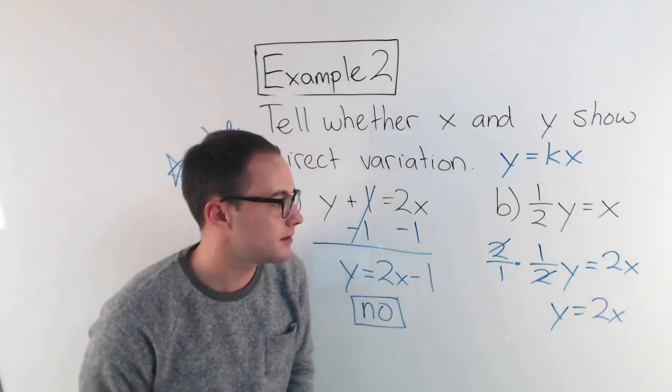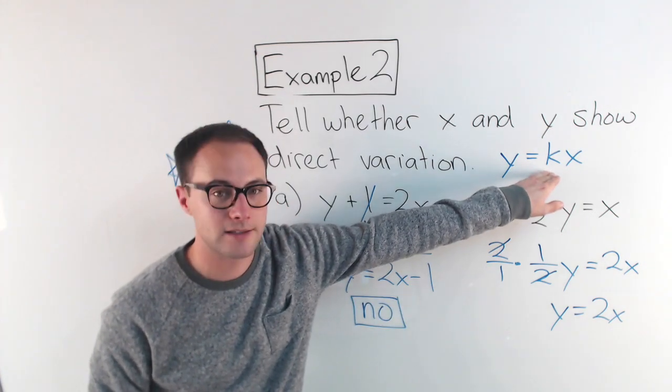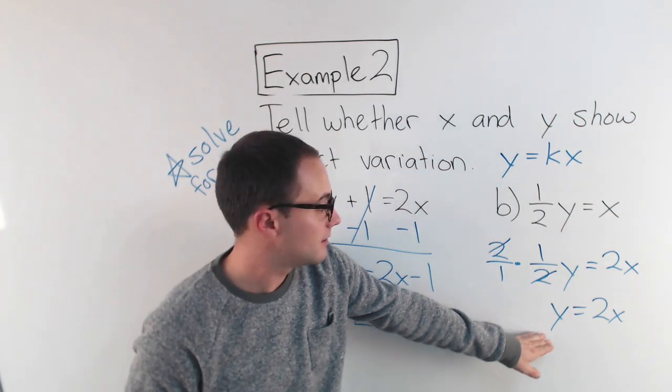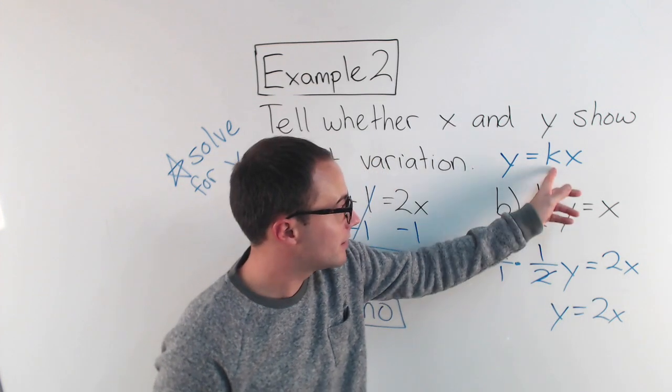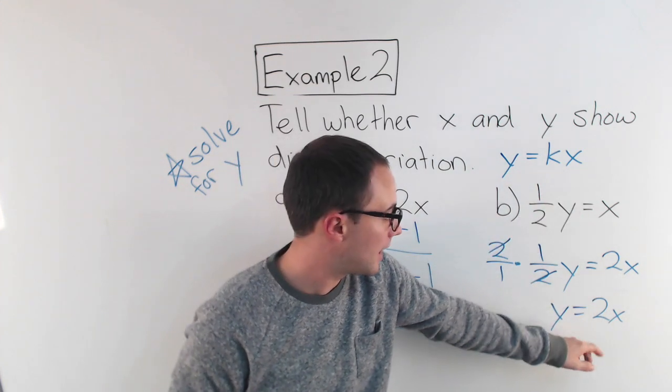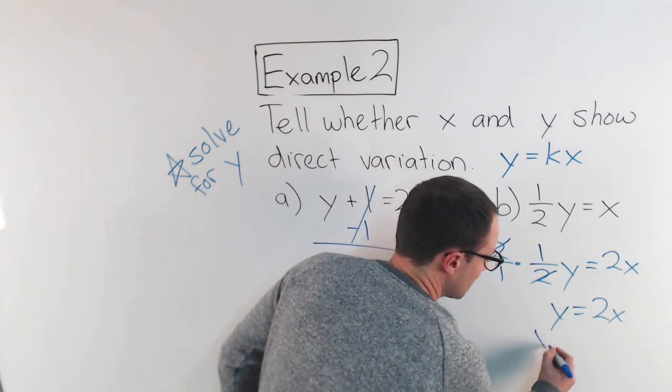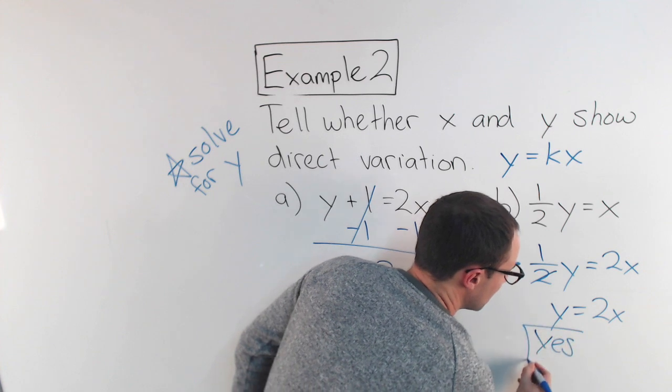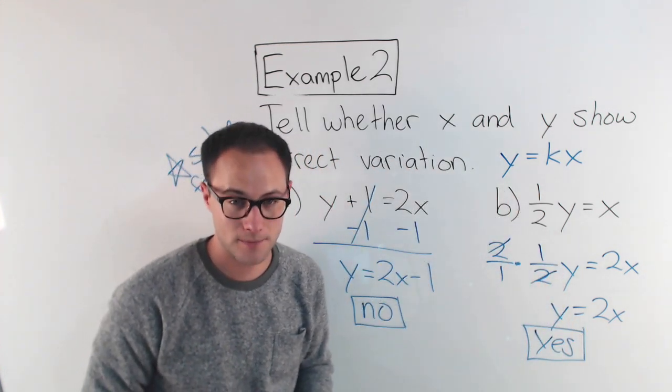In this situation, does that look like what I wanted, y equals kx? Absolutely. My constant for proportionality is 2. k is 2 here. I have y equals on the one side. There's the x. So in this situation, yes. x and y do show direct variation. Okay? Here's something to try on your own.